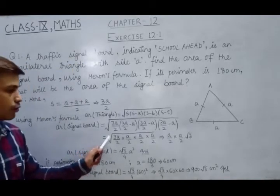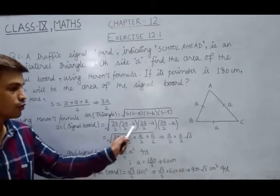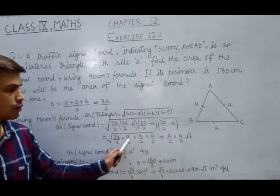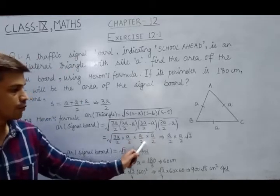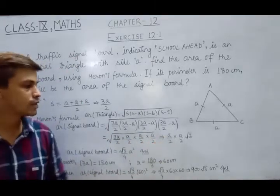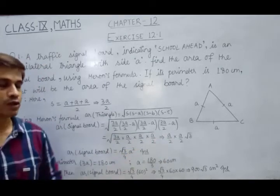So this equals to under root 3a upon 2, times 3a upon 2 minus a, which becomes a upon 2. This one is a upon 2. And last difference 3a upon 2 minus a is a upon 2 as well.